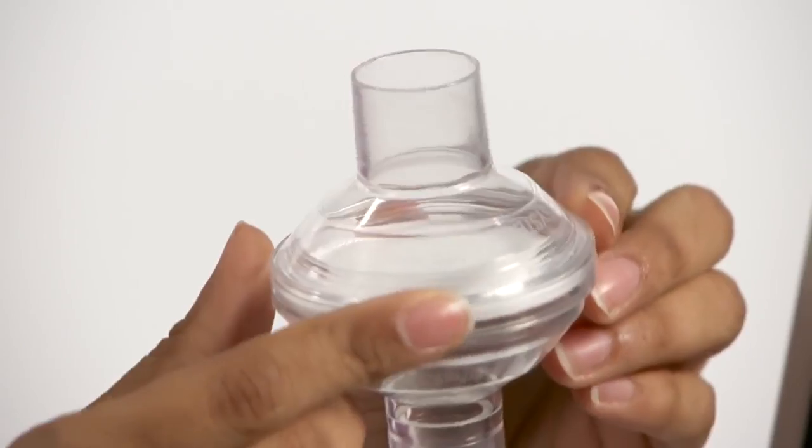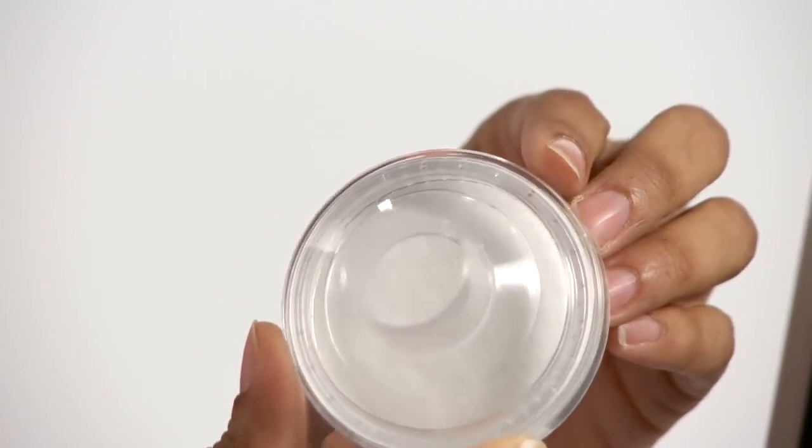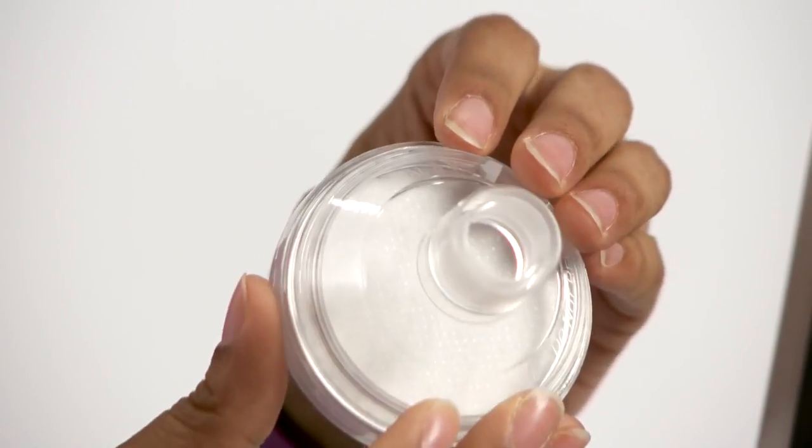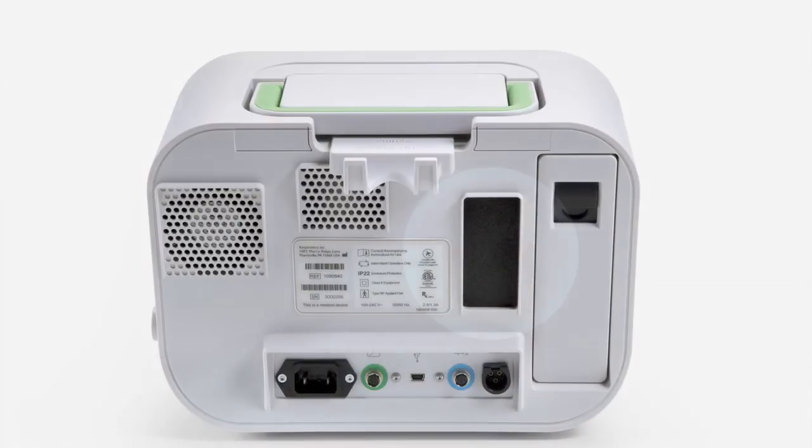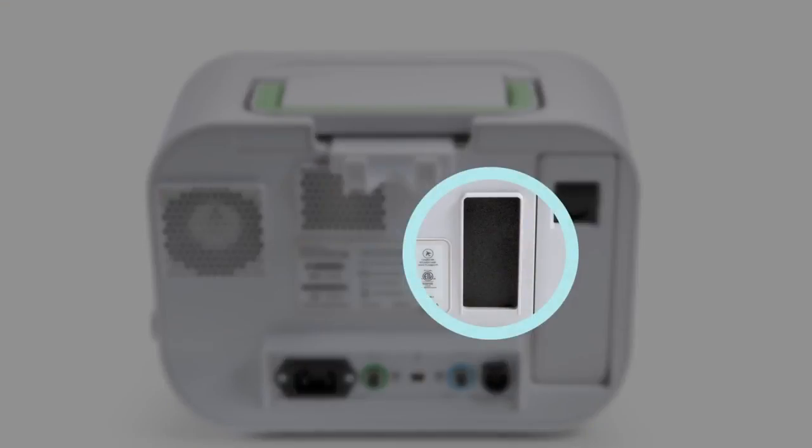The bacteria filter cannot be washed, so you should replace it if it becomes blocked with mucus or trapped moisture. You should clean the air filter at least once every two weeks and replace it with a new one every six months.